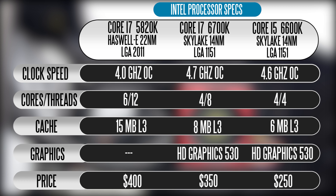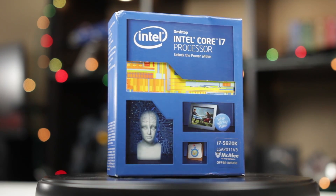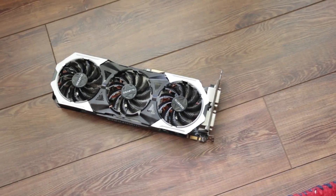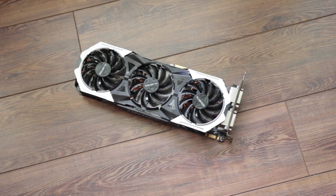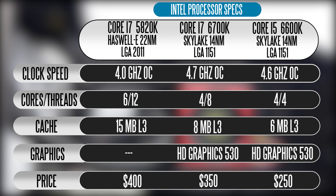The new Skylake processors also have built-in integrated HD graphics, which is great for anybody that doesn't want to use a graphics card and wants to plug directly from their motherboard to a monitor. On the Haswell-E platform, you need a discrete graphics card for video output. I'd bet 99% of people interested in these CPUs are going to be gaming, so they'll get a discrete graphics card anyway. When it comes to price, the 5820K hovers around $400 USD, versus about $350 for the 6700K and about $250 for the 6600K, though pricing fluctuates depending on where you are and when you're watching.